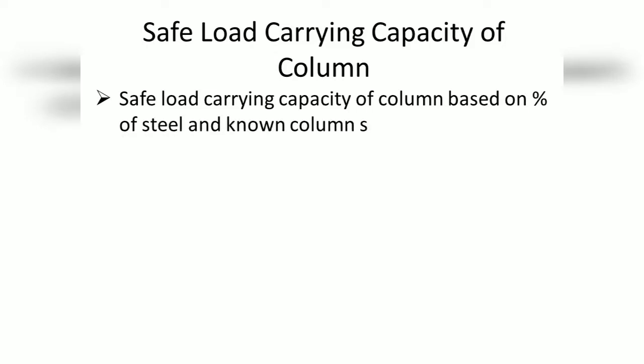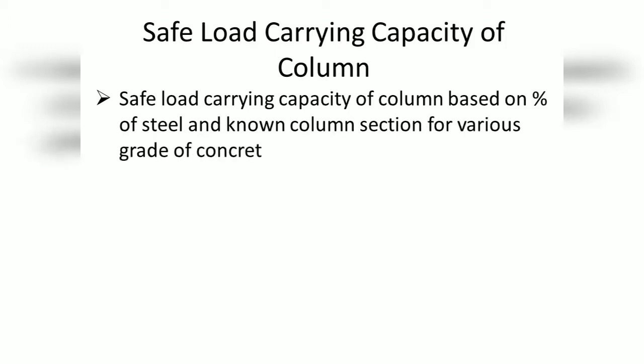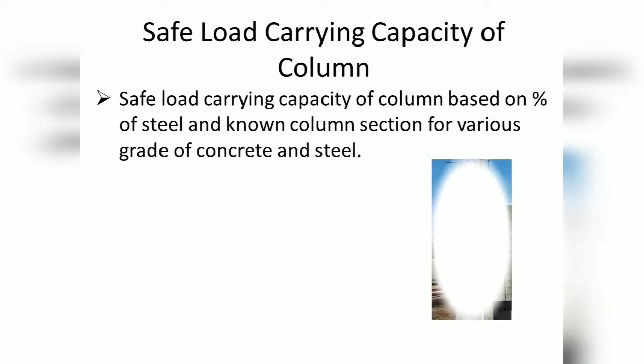The key parameters are: percentage of steel in the column, column size — breadth and depth — and the grade of concrete and grade of steel.